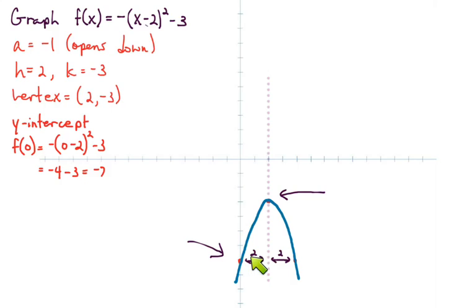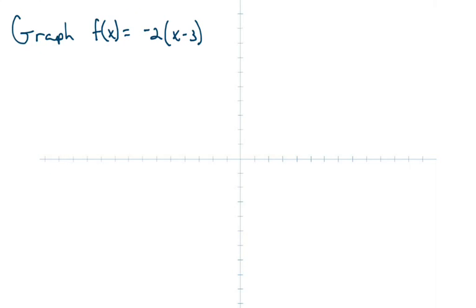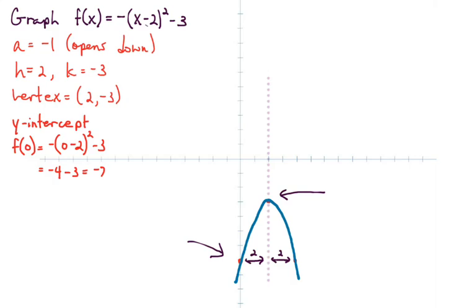So we have two spaces from the center to the left and two spaces from the center to the right. Once those three points are plotted, I can connect the dots to draw the parabola. You can see it opens down — make sure you understand where we got the vertex from and how wide it should be.